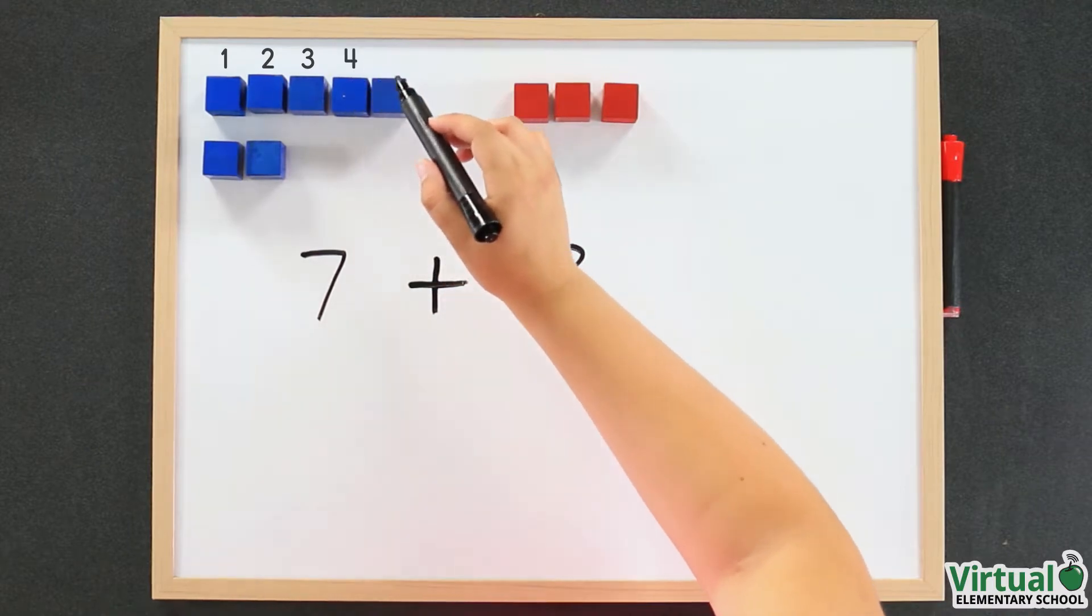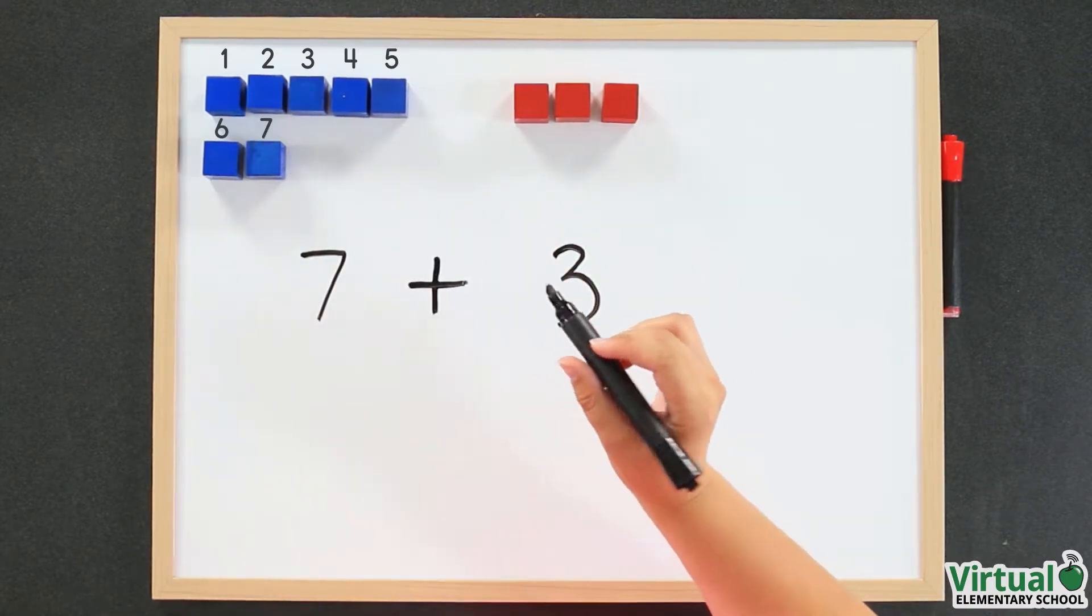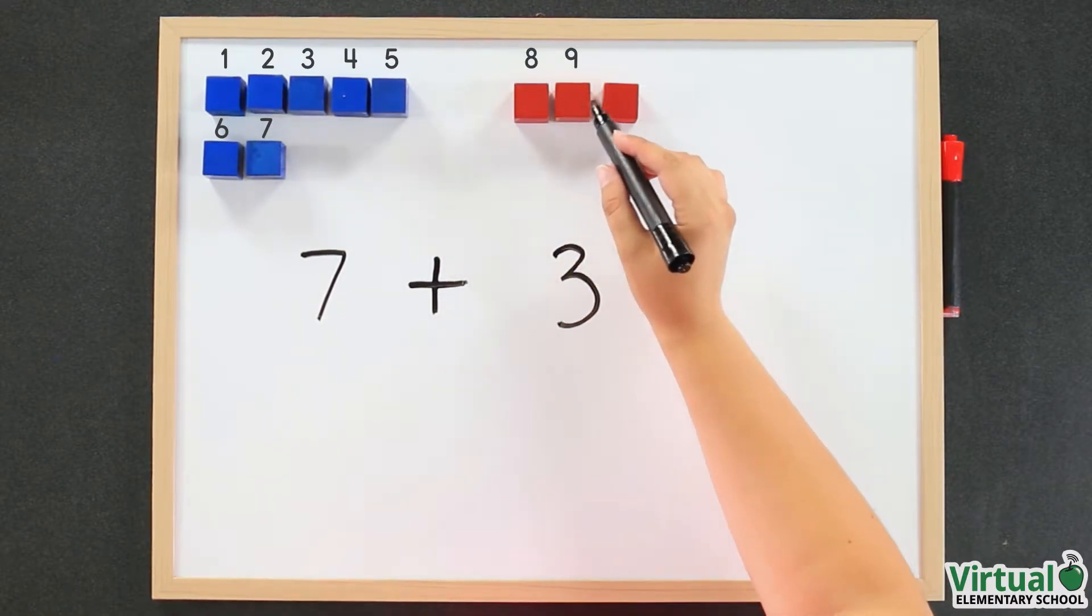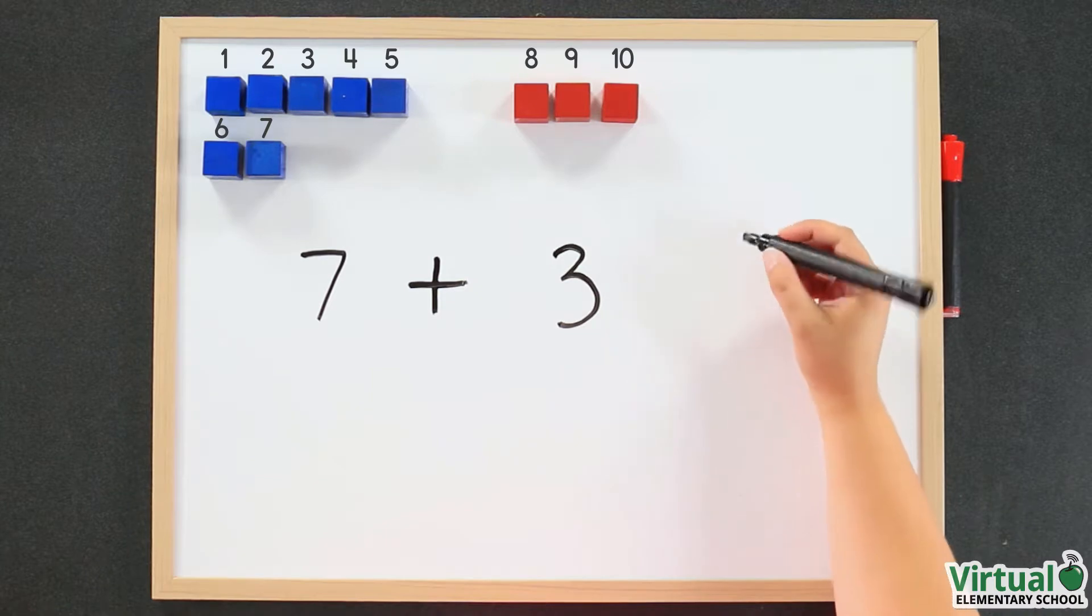Now count on to find the sum: eight, nine, ten. There are ten blocks in total. You should write that down.